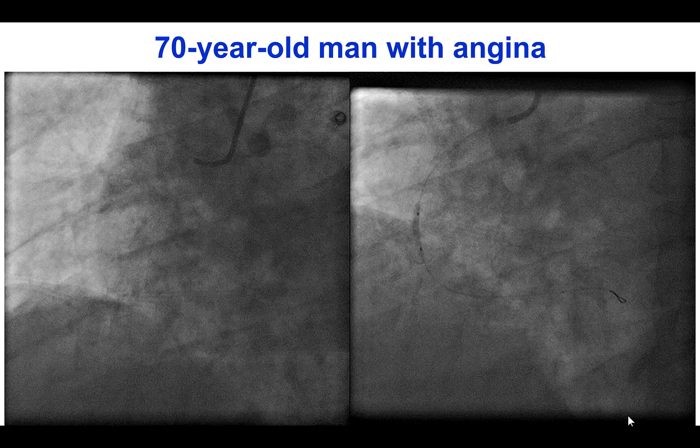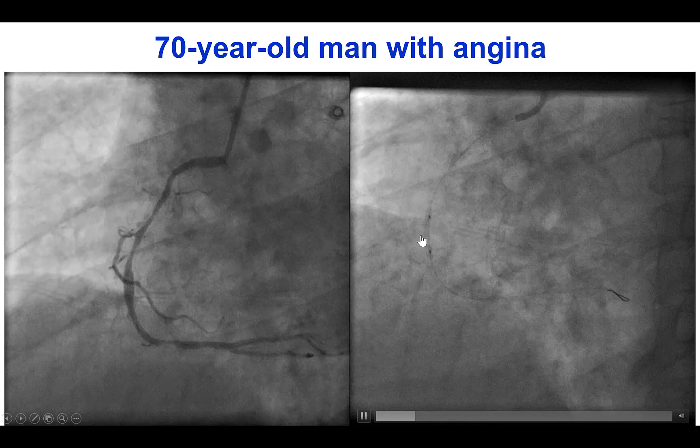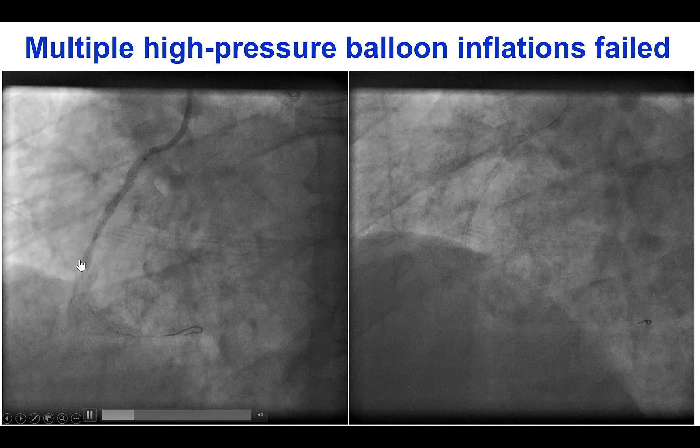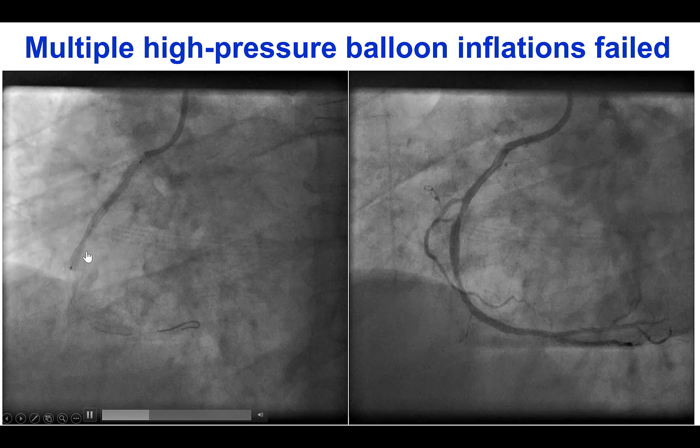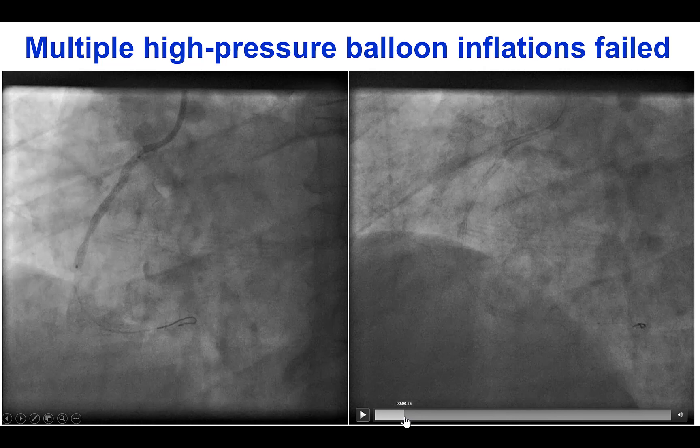The patient was an elderly man who presented with angina and was found to have significant disease in the right coronary artery. He underwent predilatation with an undersized balloon and then had placement of a drug-eluting stent. However, despite multiple high-pressure inflations up to 26 to 28 atmospheres, that mid-right coronary artery area could not be expanded. You can see even before contrast is injected into the vessel that there is a significant stent under-expansion in the middle portion of the stent.